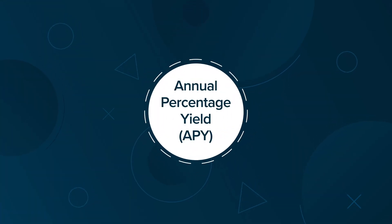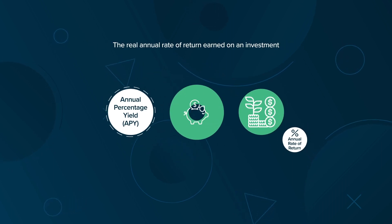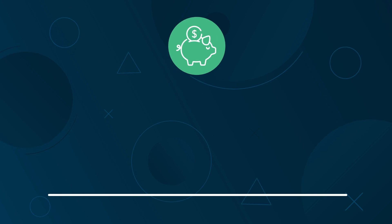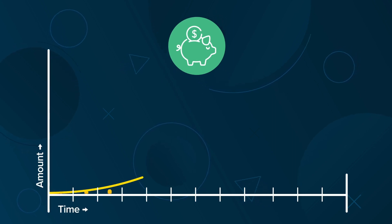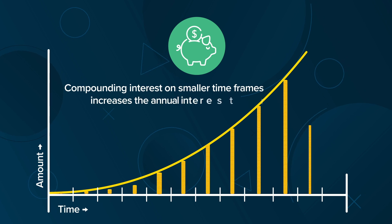Annual Percentage Yield, or APY, is the real annual rate of return earned on an investment, often a savings account, which accounts for the interest rate compounding on a smaller time frame than annually. Compounding interest on smaller time frames increases the annual interest rate.